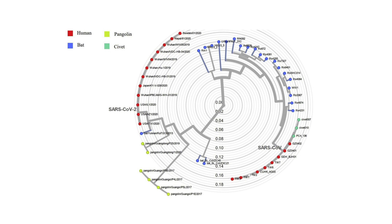Researchers were searching for the intermediate host. We know the primary host was the bat and the end host was human, but the intermediate host was uncertain — and even right now we are not sure. The most likely candidate is the pangolin, which has very high similarity with the novel coronavirus.